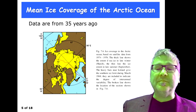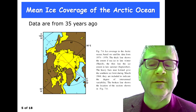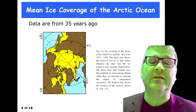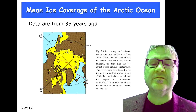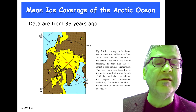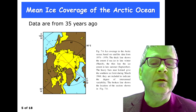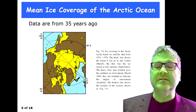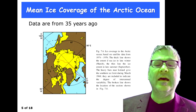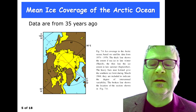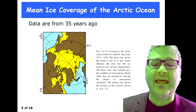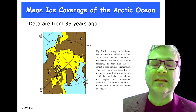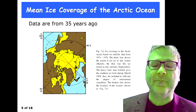Here are some data from 35 years ago which shows the ice coverage in the Arctic, based on satellite data from 1974 to 1976. The thick line shows the extent of sea ice in late winter, and the thin line is the ice extent in late summer.